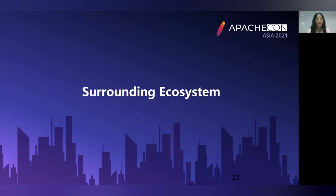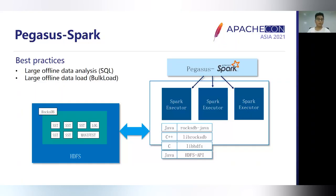Now let's welcome Jiashuo to introduce the ecosystem and community of PEXUS. Let me introduce some topics related to the surrounding ecosystem and community building. The core system provides the most important functional features, and we have provided rich ecological tools to better enhance PEXUS. First, PEXUS Spark provides a simple and easy-to-use connection to Spark, essentially a RocksDB file read-write API via PEXUS Java and JNI. One of the most important use cases is the ability to analyze and load offline data.